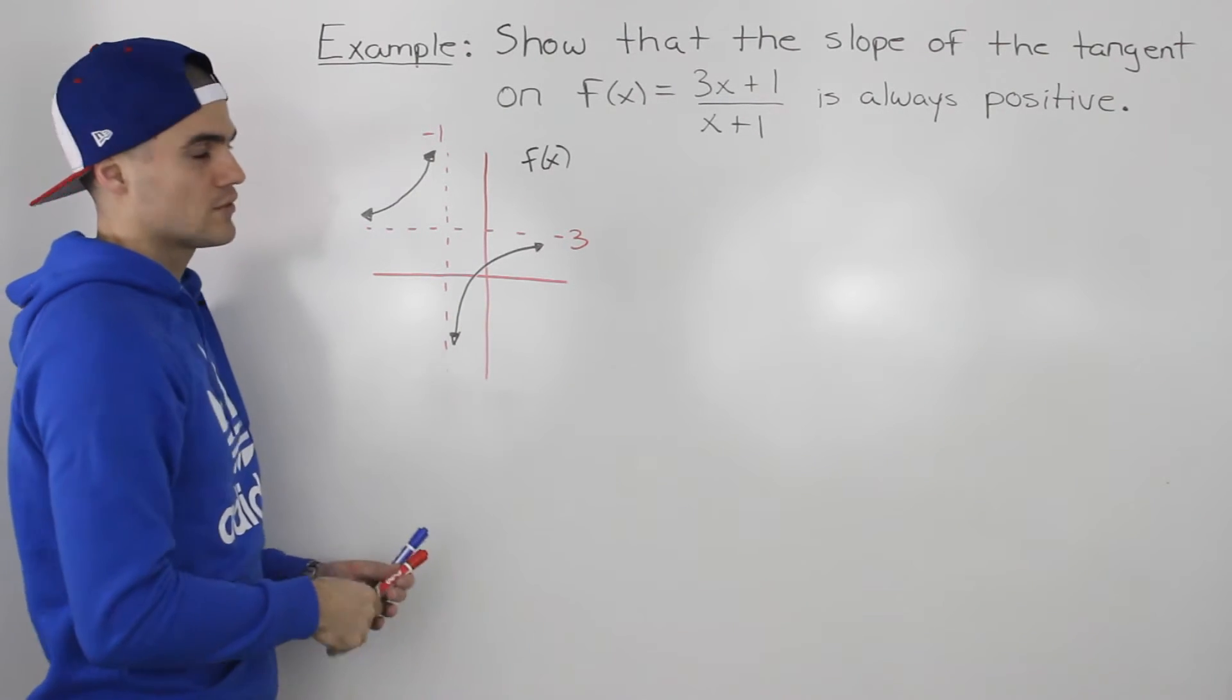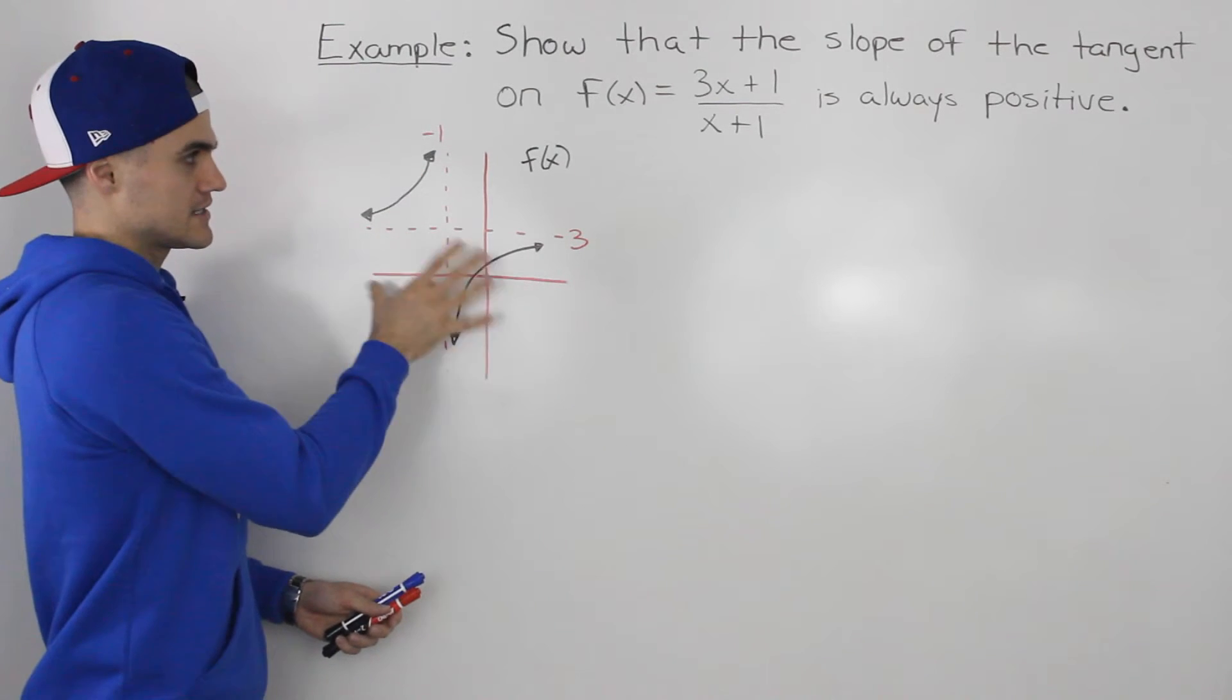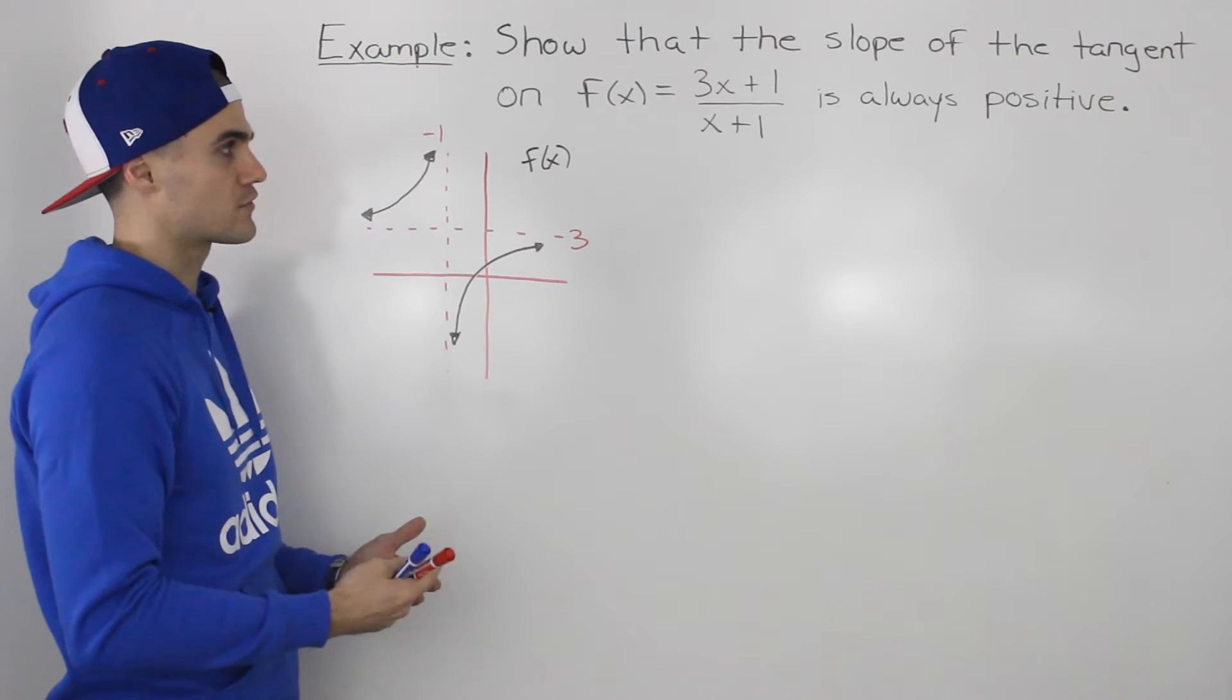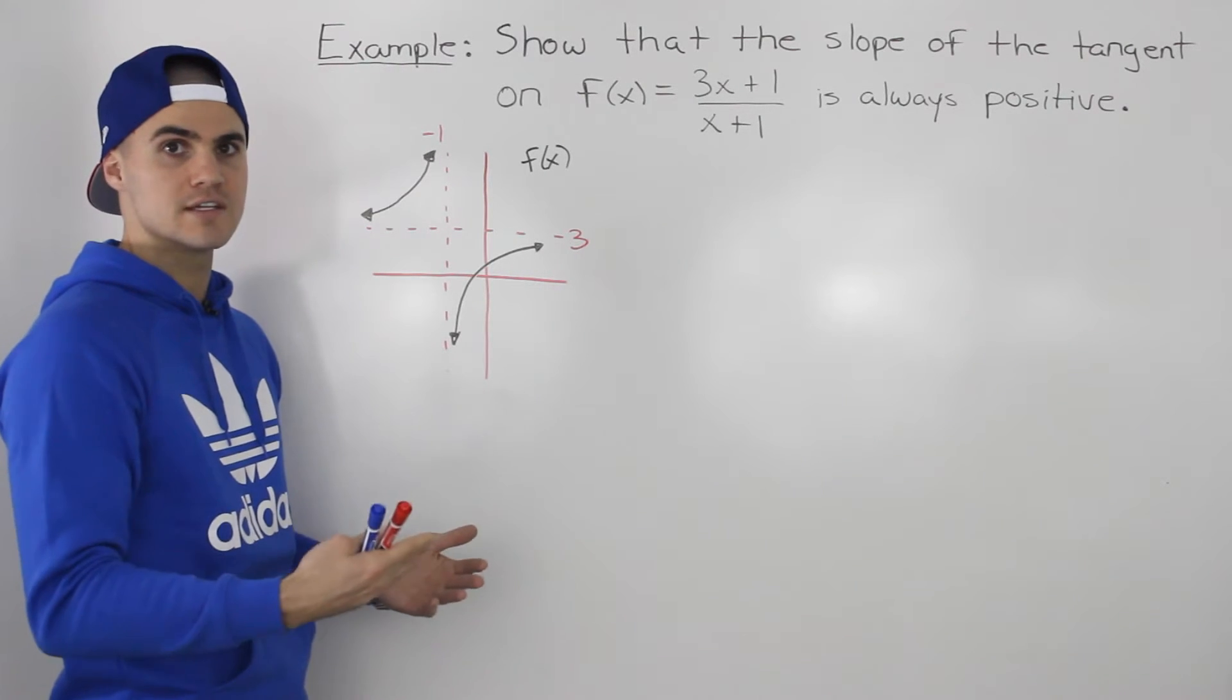Now, how do we show this algebraically? We've shown it through a diagram, and it's easy to see with a diagram. How can we show it with the derivative? Because the derivative always gives us the slope of the tangent.